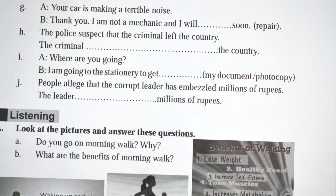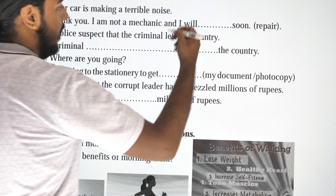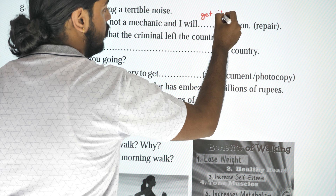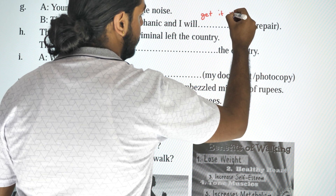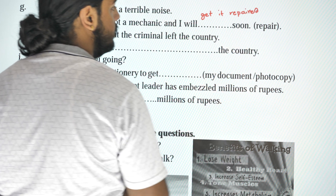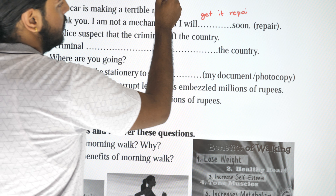Next dialogue: 'Your car is making terrible noise.' Reply: 'I'm not a mechanic, and I will get it repaired soon.' This is the causative 'get something done' structure — 'get it repaired.'